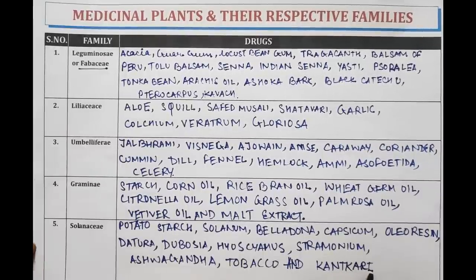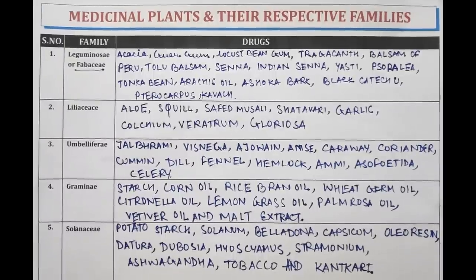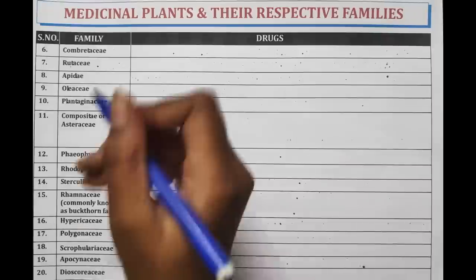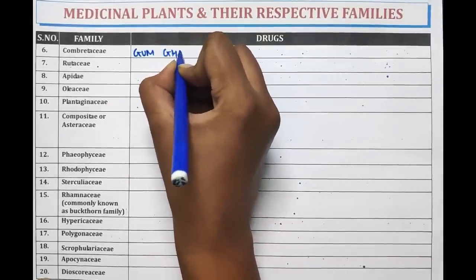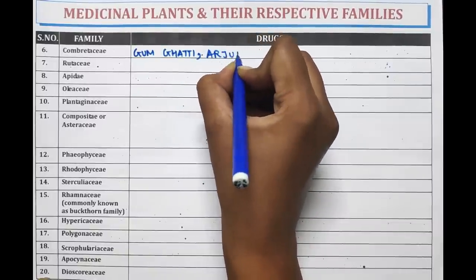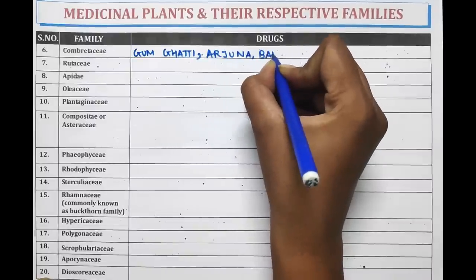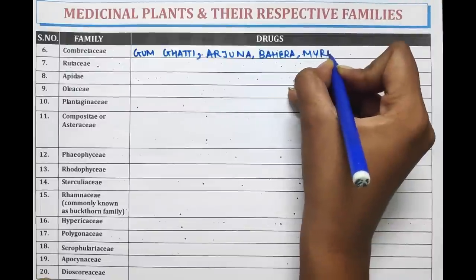In this table we have studied about the families Leguminosae, Liliaceae, Umbelliferae, Graminae, and Solanaceae. After Solanaceae, we will be discussing Combretaceae. Combretaceae family contains Gum Ghatti, Arjuna, Bahera, and Myrobalan.